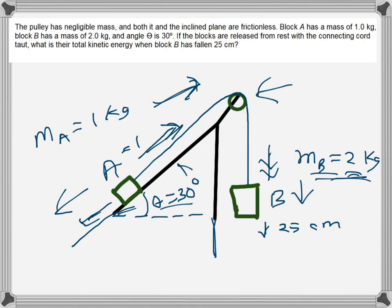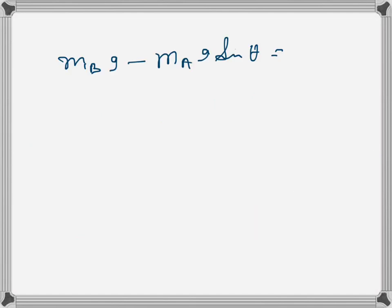We are assuming the tension is in that direction. This is m_B g and this is m_A g sin theta because theta is 30 degrees, not 90 degrees, not vertical. That will equal m_A plus m_B.